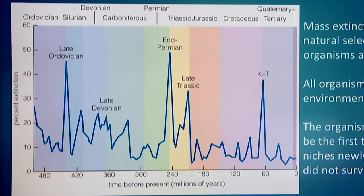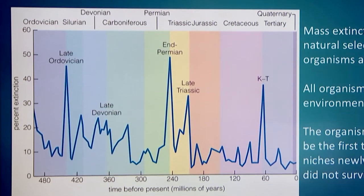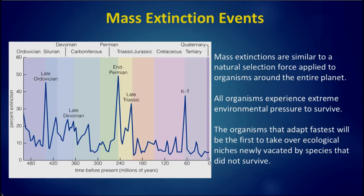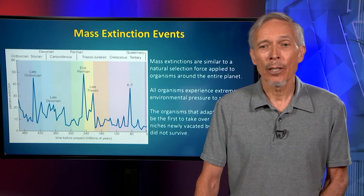The largest mass extinction was the late Ordovician, about 440 million years ago. There was another dramatic one at the end of the Permian era, about 250 million years ago. And then the famous one called the KT boundary, at about 65 million years ago, corresponding not only to the death of the dinosaurs but many other large mammals. Mass extinctions are similar to a natural selection force applied to organisms, but in this case around an entire planet — all organisms are experiencing extreme environmental pressure, and only those that can adapt fastest will take over the new ecological niches vacated by species that go extinct. It's a dramatic form of natural selection playing out on short geological timescales.